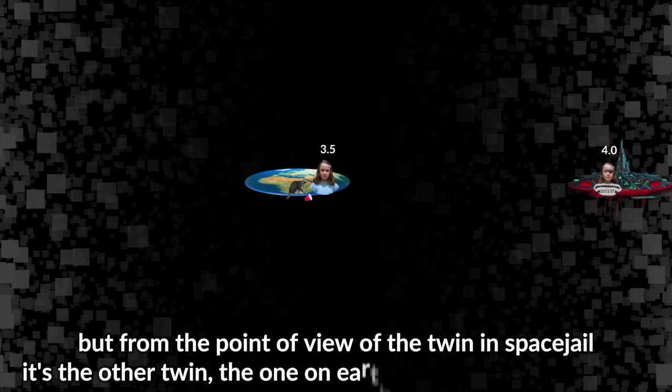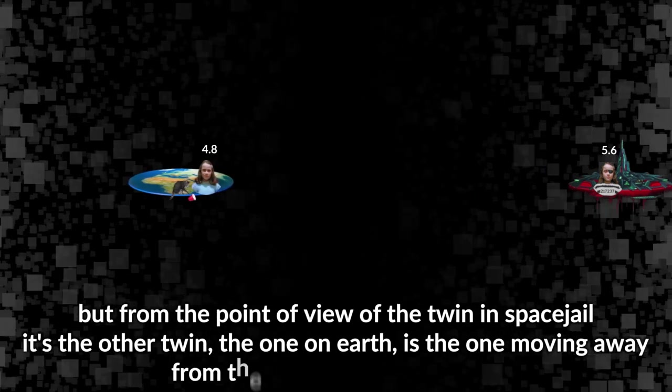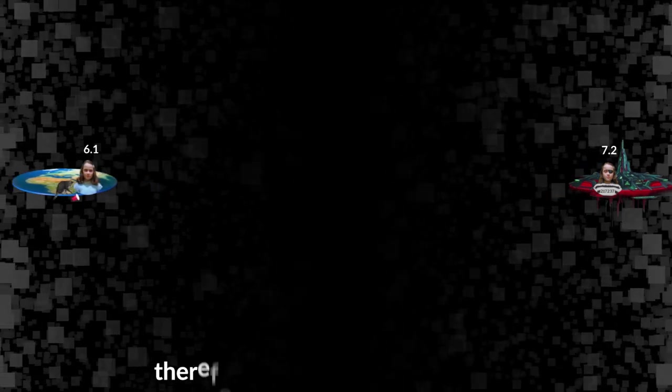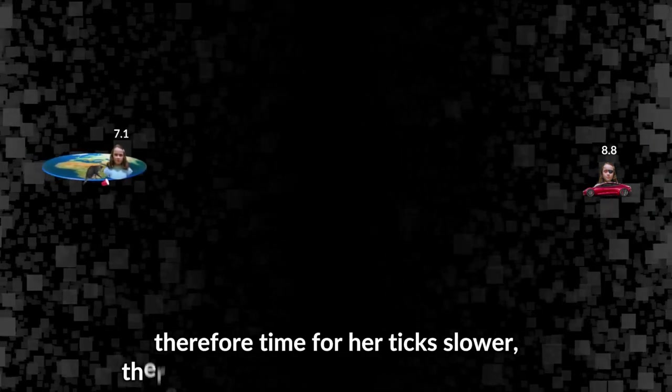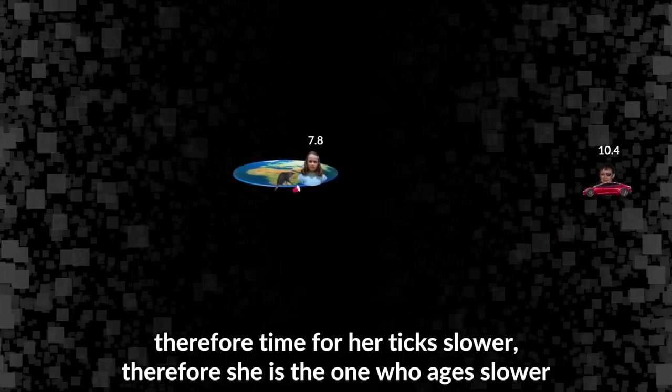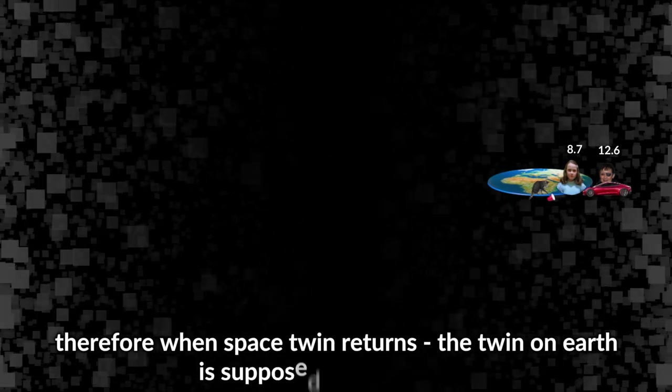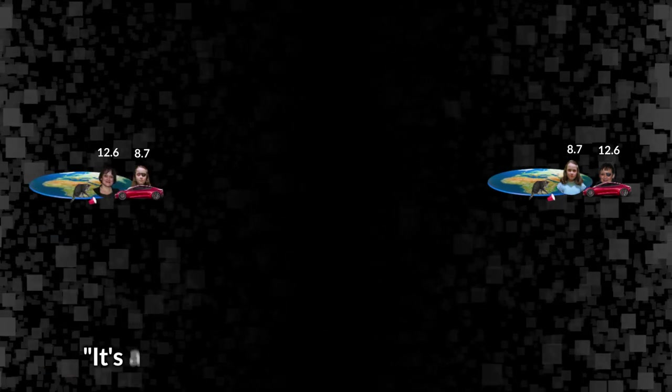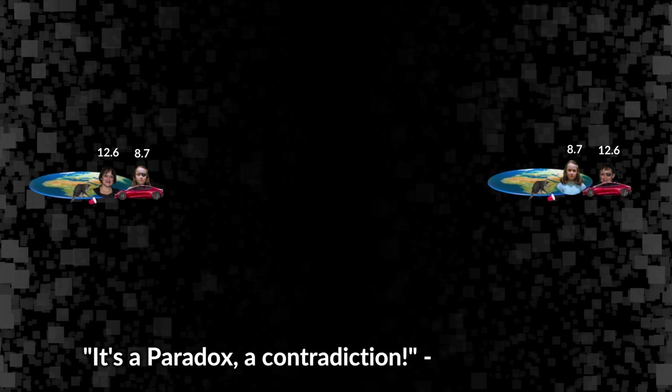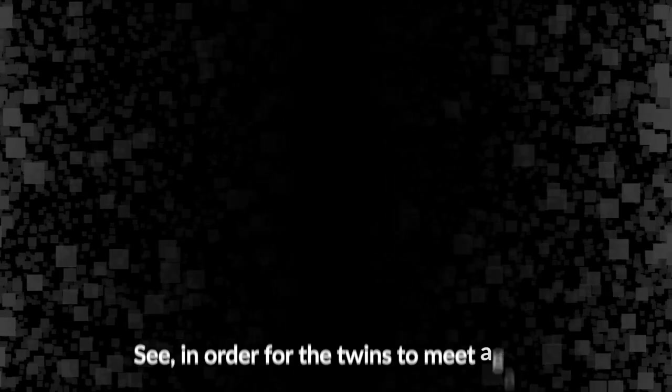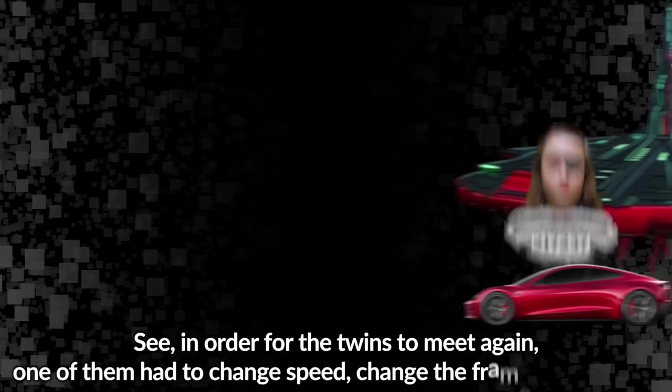But from the point of view of the twin in space jail, it's the other twin - the one on earth - is the one moving away from the space jail at high speed, therefore time for her ticks slower, therefore she is the one who ages slower, therefore when space twin returns, the twin on earth is supposed to be younger. It's a paradox! A contradiction, you would say. And I would say, again, 'Pathetic!'